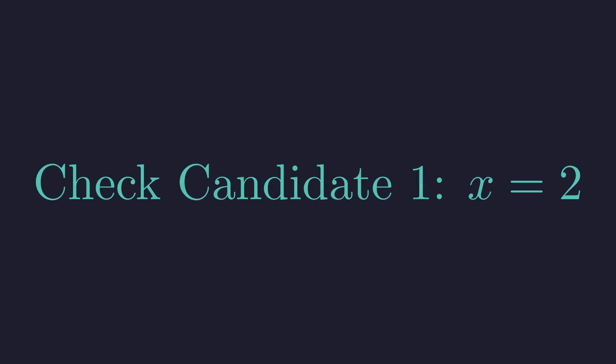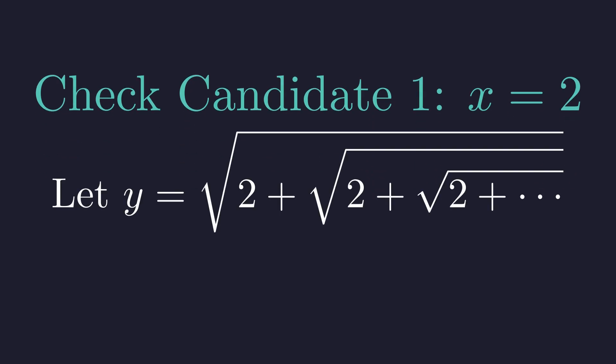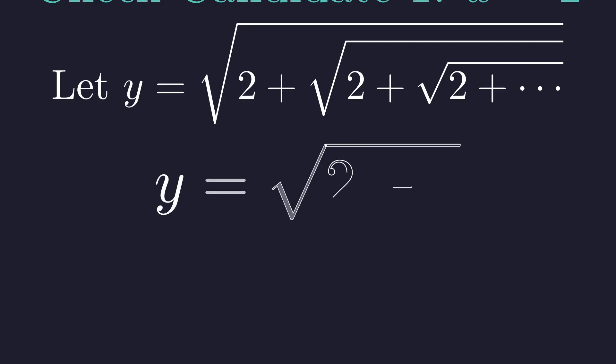Let's start with x equals 2. Will it survive the test? When x is 2, let's call the value of the left side y. Because of self-similarity, y equals the square root of 2 plus y.